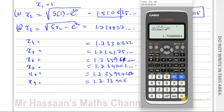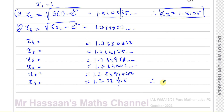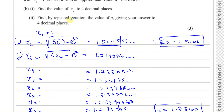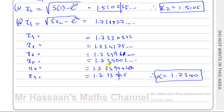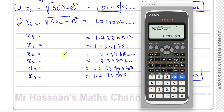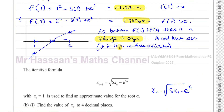Pressing equals a few more times, the value settles at 1.733995, and to four decimal places that rounds to 1.7340. So alpha equals 1.7340 to four decimal places. By 'repeated iteration' they mean keep putting the value back into the formula, and this calculator trick makes it easy — you didn't actually have to write all those intermediate values down. You could just write x₂, maybe x₃, then keep pressing equals until it stops changing, and write the final answer to four decimal places.